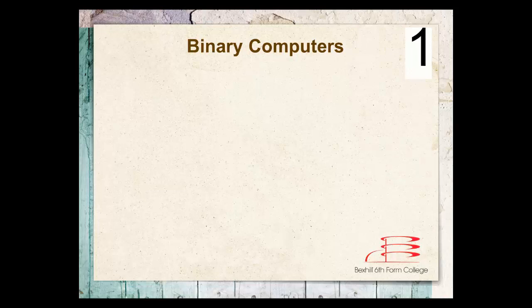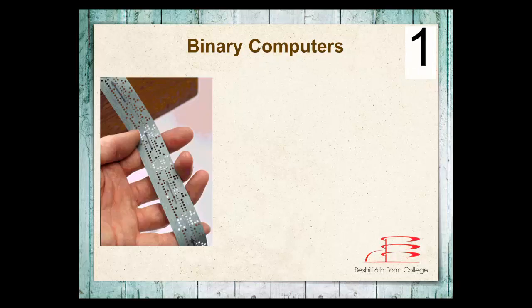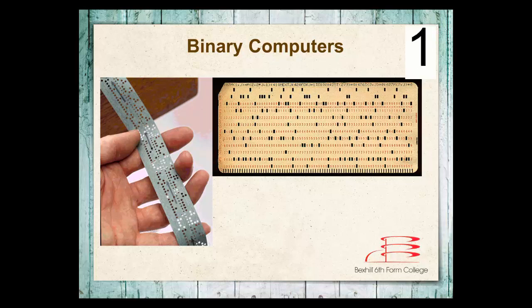We're looking at languages, so at some point we've got to get to the language side. When Flowers came up with the Colossus, when people were designing the first computers, we had to talk to them in the switching language they had developed — we had to talk directly to the computer. We did so through ticker tape and punch cards. All these were was they used light to pass through holes: if light could pass through, it was a 1; if it couldn't, that was a 0. An on switch or off switch allowing current to flow or not.